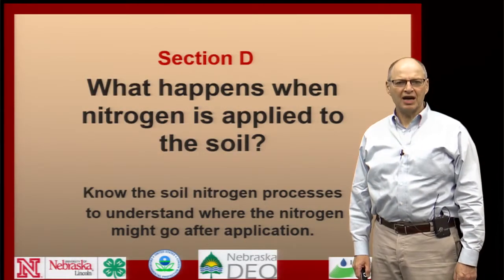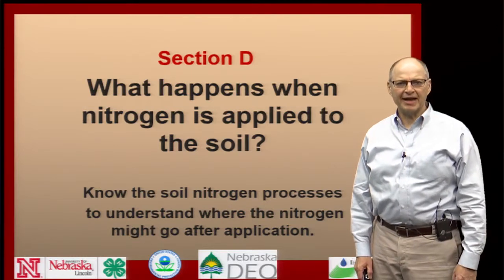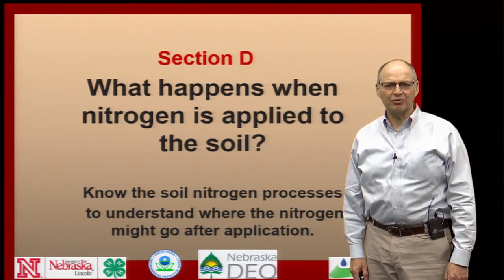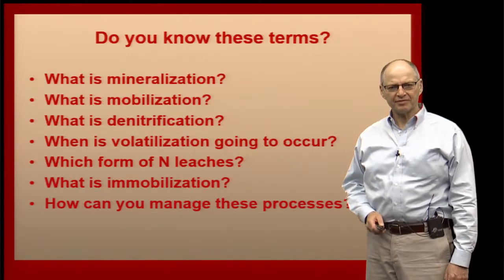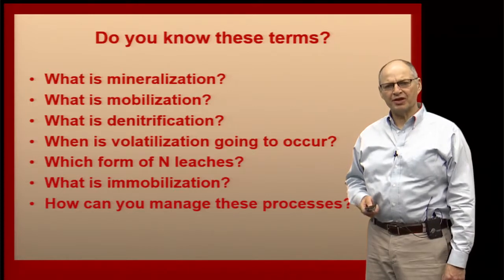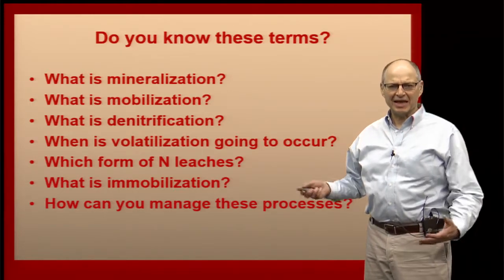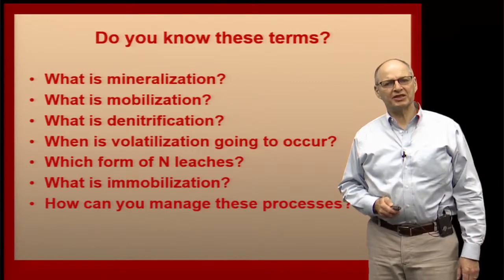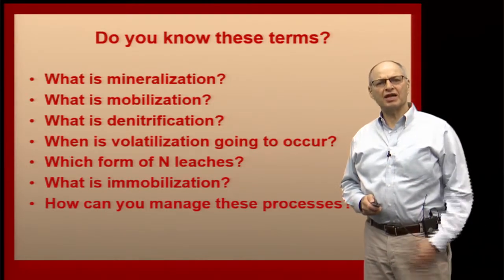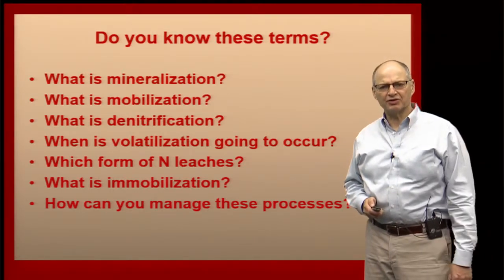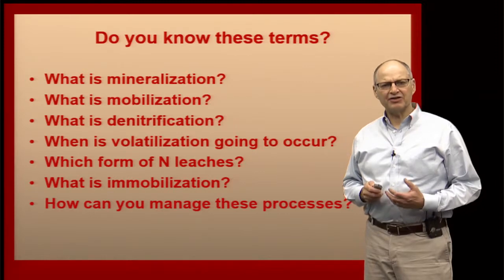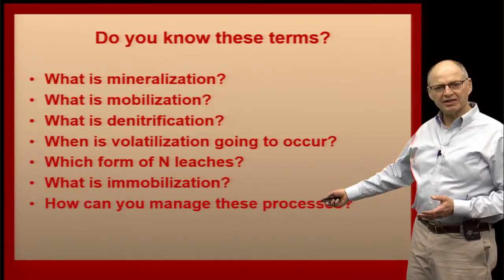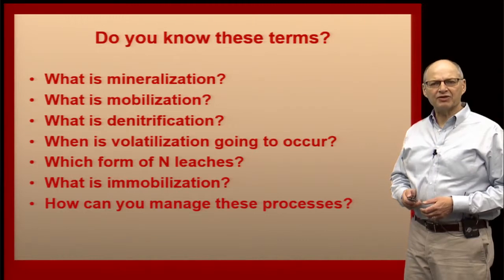Hello. My name is Charles Shapiro. I am the soil scientist at the Haskell Ag Lab near Concord, Nebraska. We're going to be going over what's in Section D, titled 'What Happens When Nitrogen is Applied to the Soil.' It's very important that we understand what these terms mean. These are the processes that happen when you apply nitrogen to the soil or organic amendments, and since nitrogen is the nutrient we spend the most money on, it's important that we understand how to manage these processes to keep as much nitrogen in the root zone as possible.